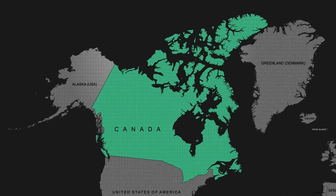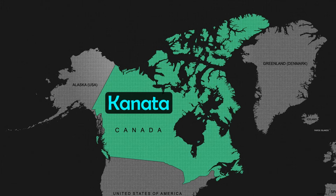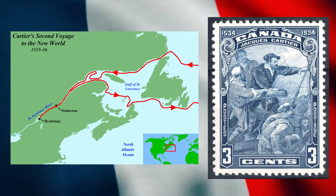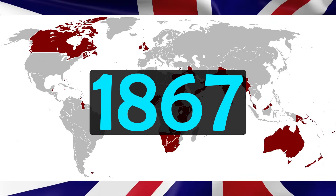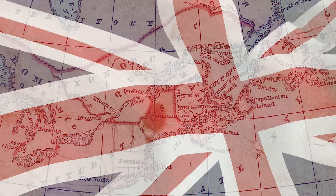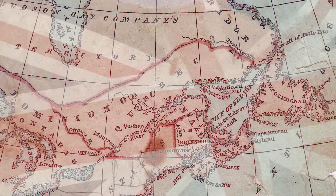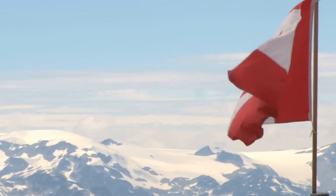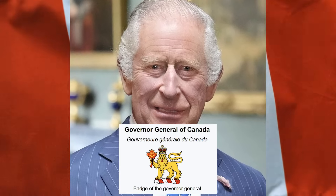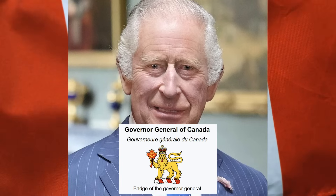Canada gets its name from the Iroquoian word 'Kanata', meaning village or settlement. Over time, Canada came to denote the French colony along the St. Lawrence River, and eventually the vast country we know today. In 1867, Canada became a self-governing dominion within the British Empire through the confederation of several British North American colonies. While it gained full legislative independence in the 20th century, Canada remains a constitutional monarchy. King Charles III serves as Canada's official head of state, represented domestically by the Governor General, although most of their powers are largely ceremonial.